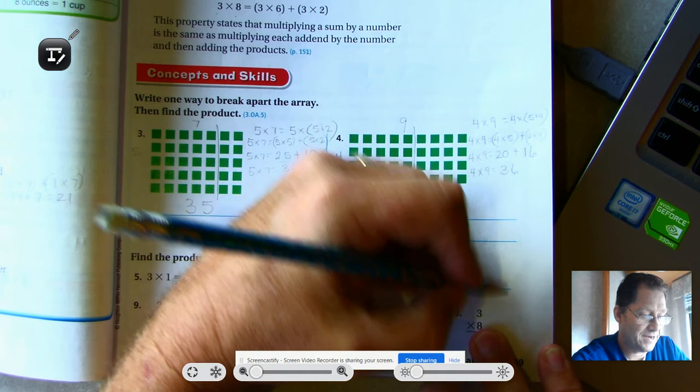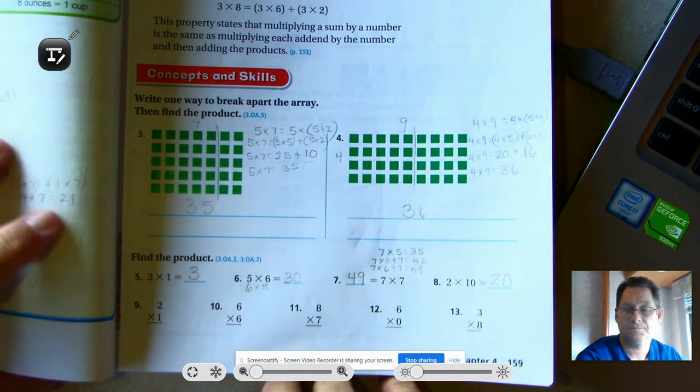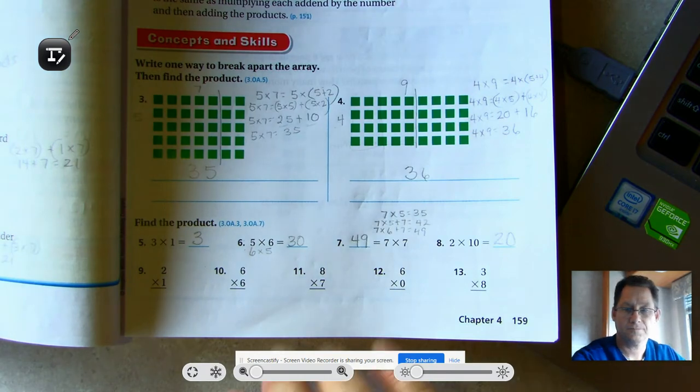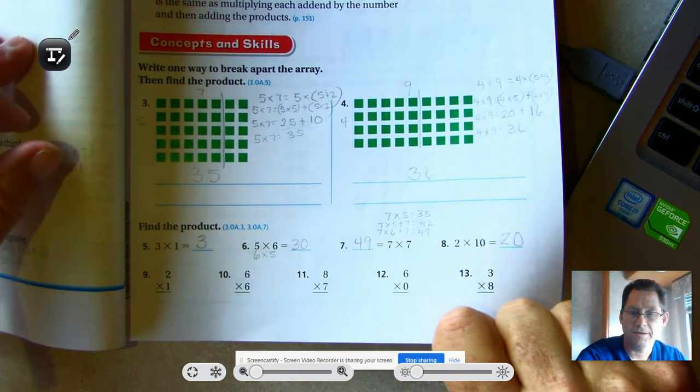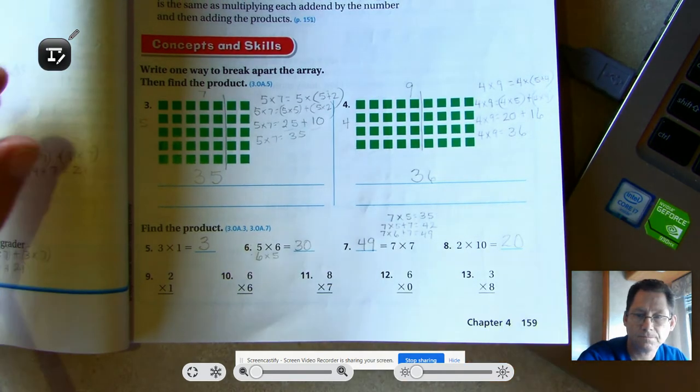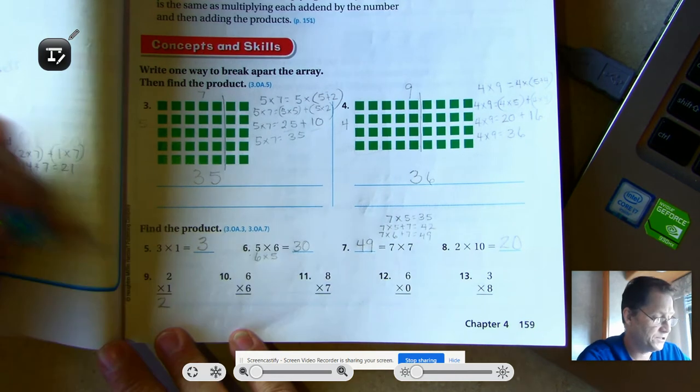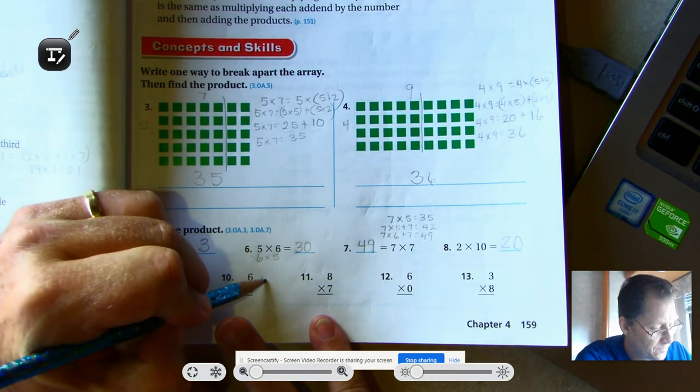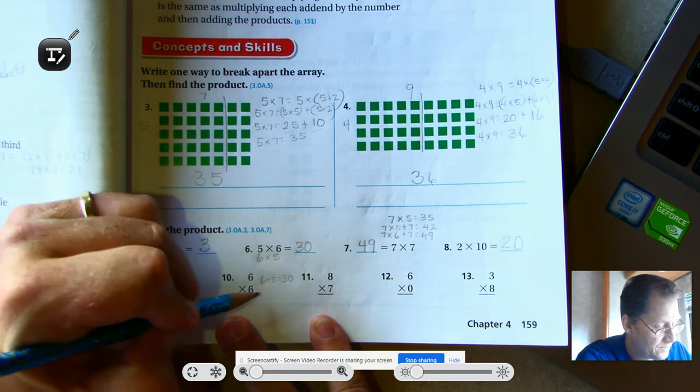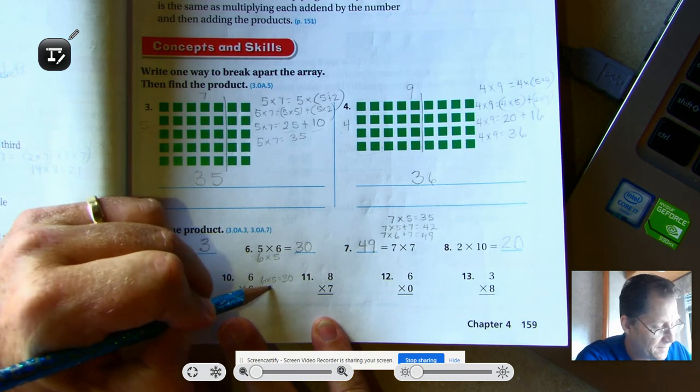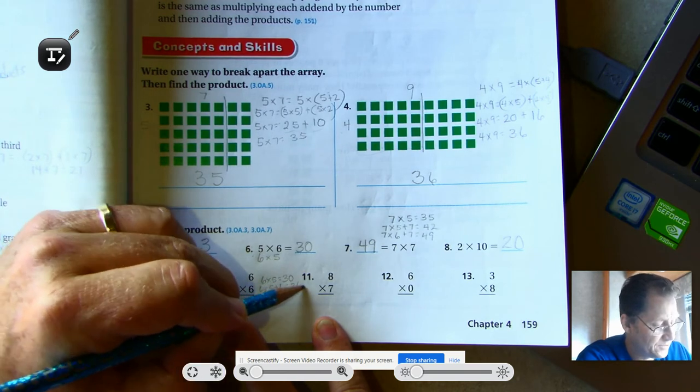Two times 10, I know that it has to end in a zero. And two times one is two. Two times one, identity property of multiplication, just two. Six times six. Well, I know six times five is 30. So six times five plus one more six is 36.